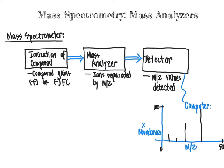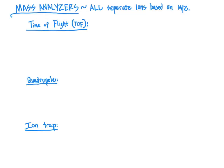Our three types of mass analyzers are time of flight, quadrupole, and ion trap. Keeping in mind that these are all ways of separating ions based on their mass to charge ratio — because once we generate the ions at the first step of the mass spectrometry process, we need to separate those based on m/z so that we can detect them and plot a mass spectrum.